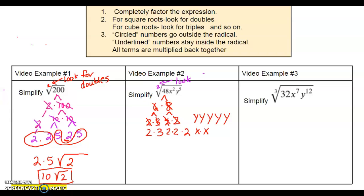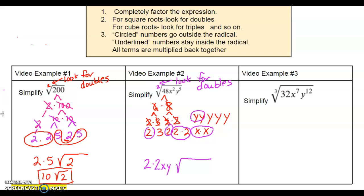There's an imaginary 2 index, so we look for doubles. I'm going to write a root for my answer. Here's a double 2, so it comes out once. Here's another double 2, so it comes out. Here's a double x. Here's a double y. Here's another double y. The single 3 goes inside, and the single y goes inside. Now multiply terms outside together: 2 times 2 is 4, with x, and 2 y's written as y squared. Inside we have 3y. So the answer is 4xy² √(3y).